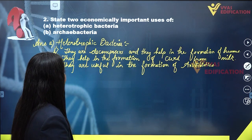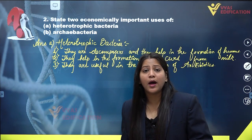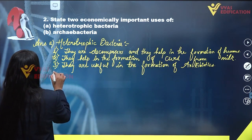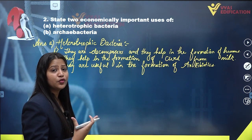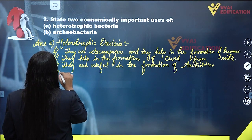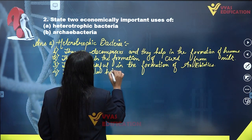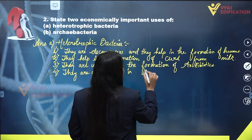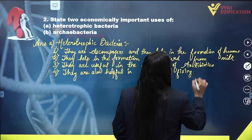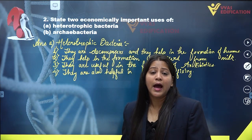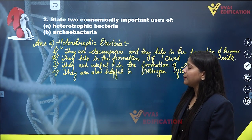Some other economic importance of bacteria is that they are also helpful in nitrogen fixing. Some bacteria such as cyanobacteria are very helpful in the fixation of nitrogen for large and advanced plants. When in a symbiotic relationship with plants, they fix nitrogen present in the atmosphere, and hence they have economic importance in nitrogen fixing as well.